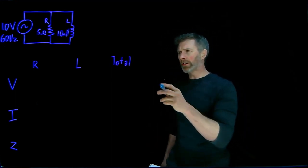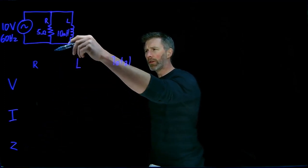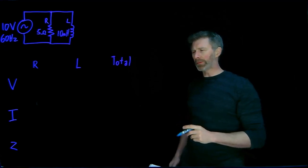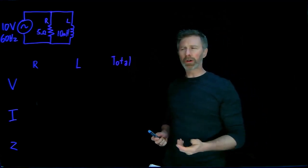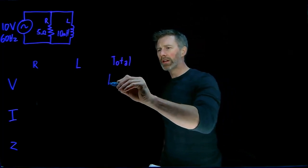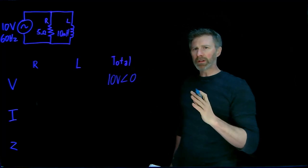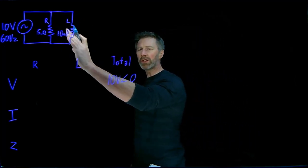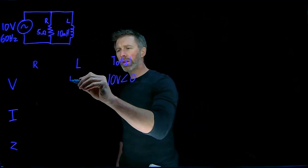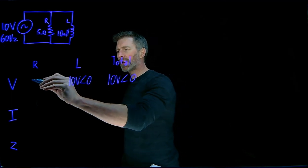To start off, I've got a table with voltage, current, and impedance for the resistor, inductor, and the total circuit. I can start filling this table in with some values I know already before doing any calculations. The total voltage is 10 volts with a phase angle of zero degrees. Because it's a parallel circuit, both of these devices are in parallel with the source, so they will also have a voltage across them of 10 volts with a phase angle of zero degrees.